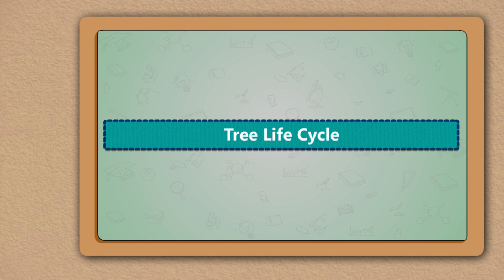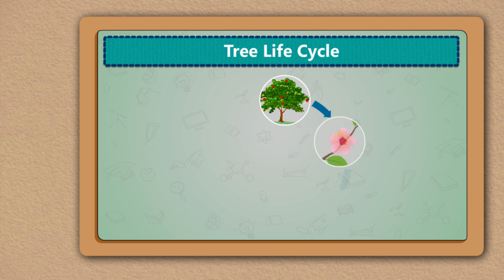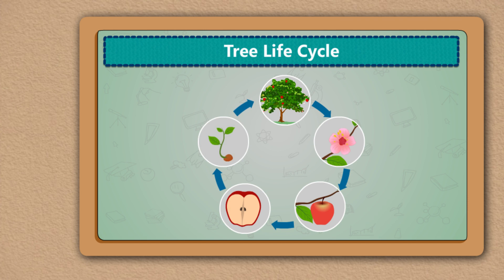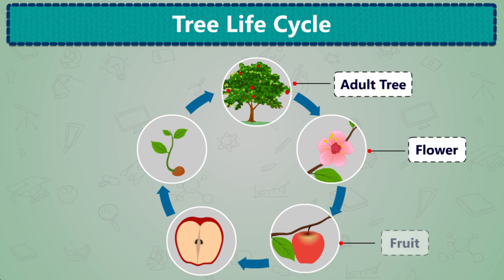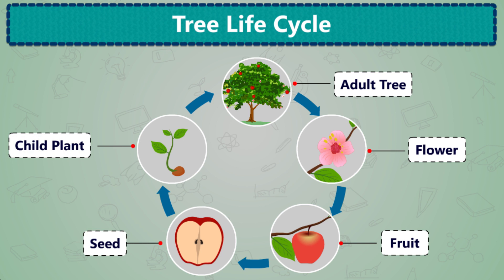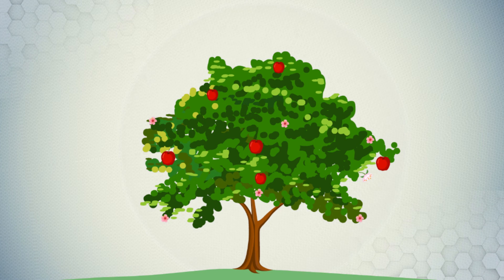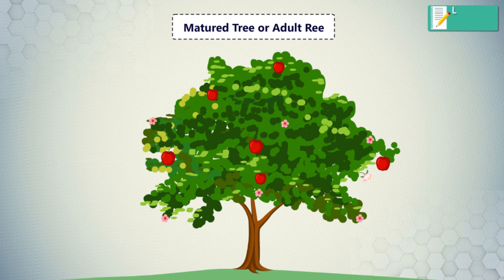The purpose of this lesson is to understand the life cycle of trees. The different stages of this cycle are adult tree, flower, fruit, seed, and child plant or sprout. The objective is to understand how the life cycle transforms from tree to flowers, flowers to fruit, fruit to seed, and finally seed back to a matured tree.